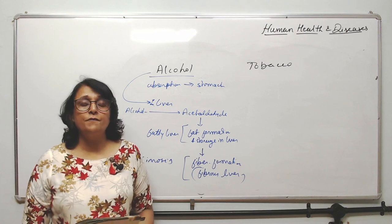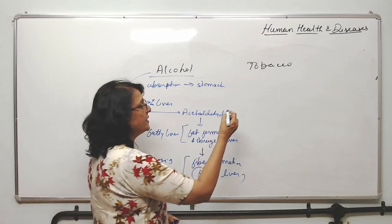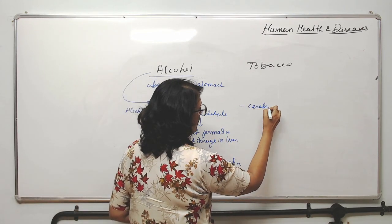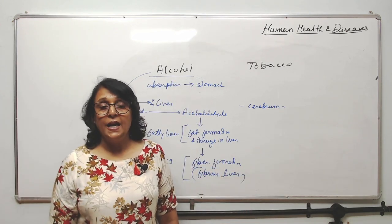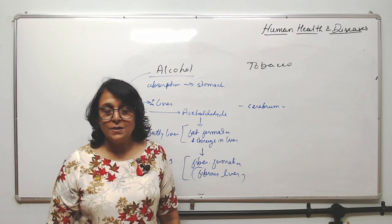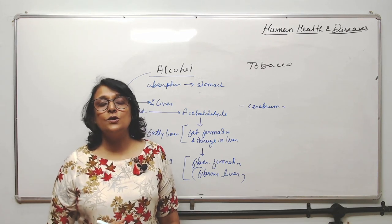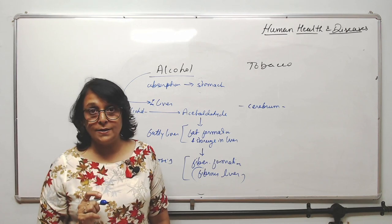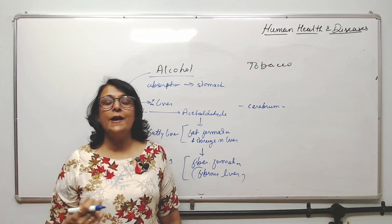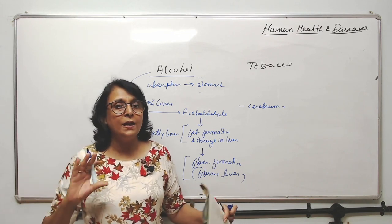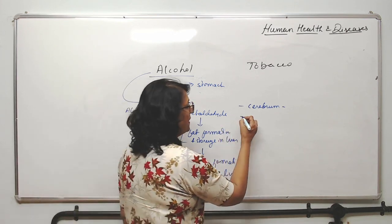When a person takes alcohol, the first part of every system to get affected is the cerebrum. The cerebrum is responsible for conscious effort — it is responsible for senses, things you do after thinking and analyzing. Under the influence of alcohol, the person loses that conscious behavior; they start using abusive language, screaming, and have no idea of what is happening around them.